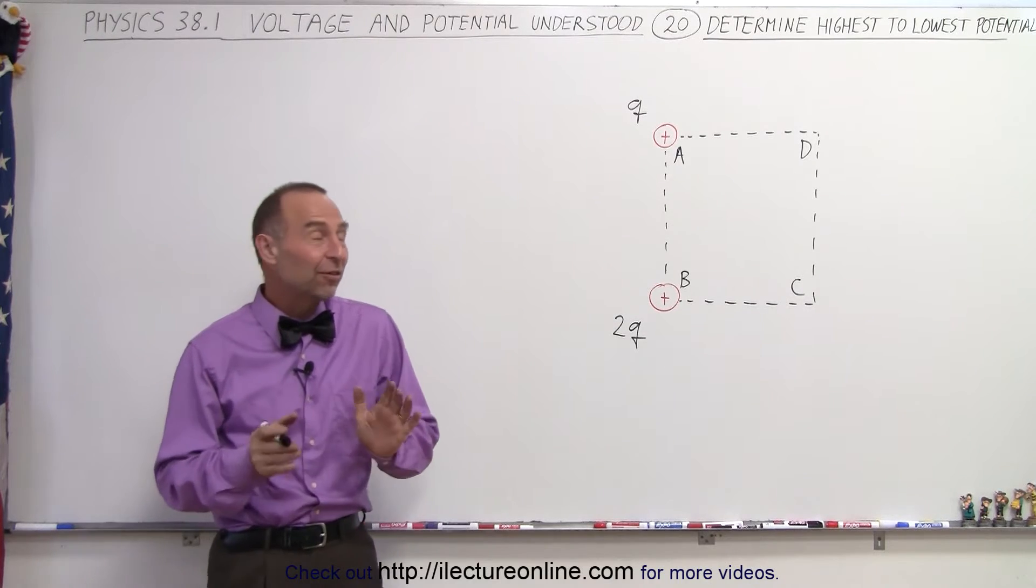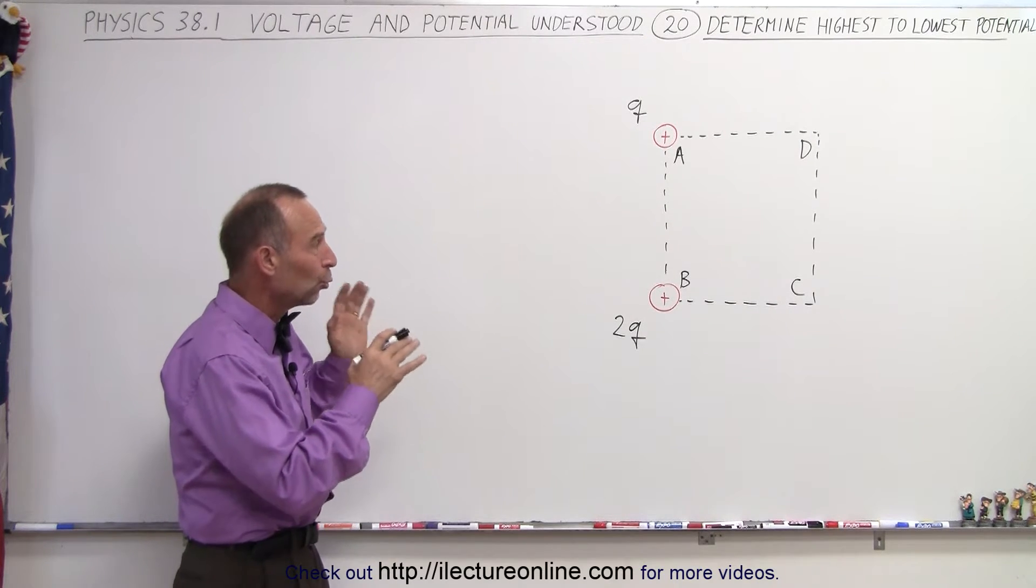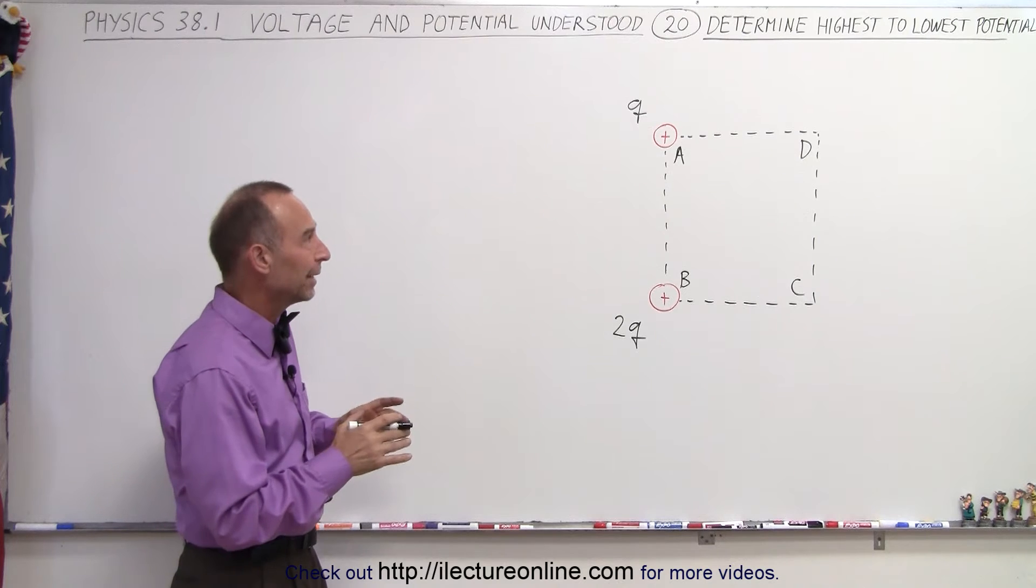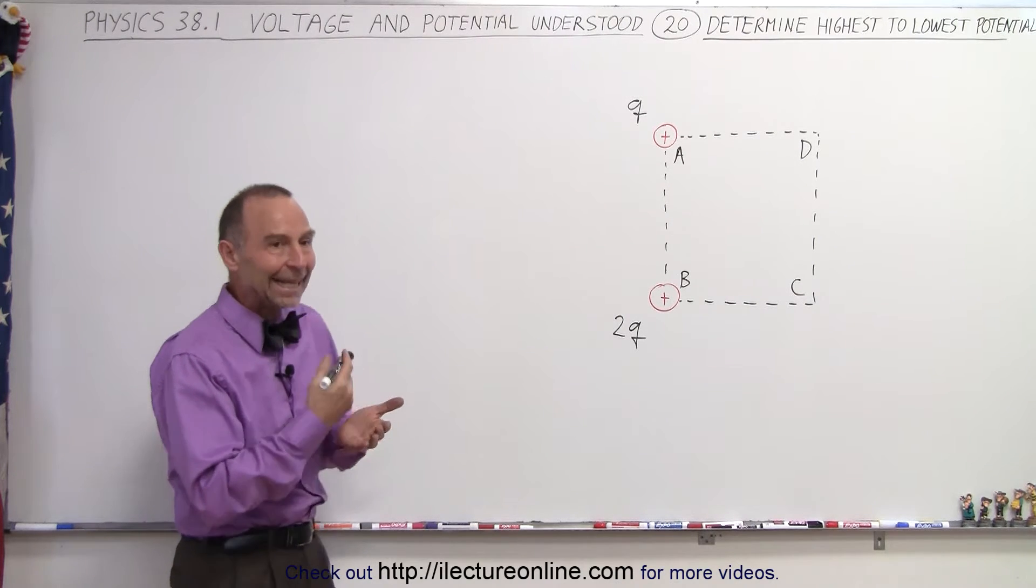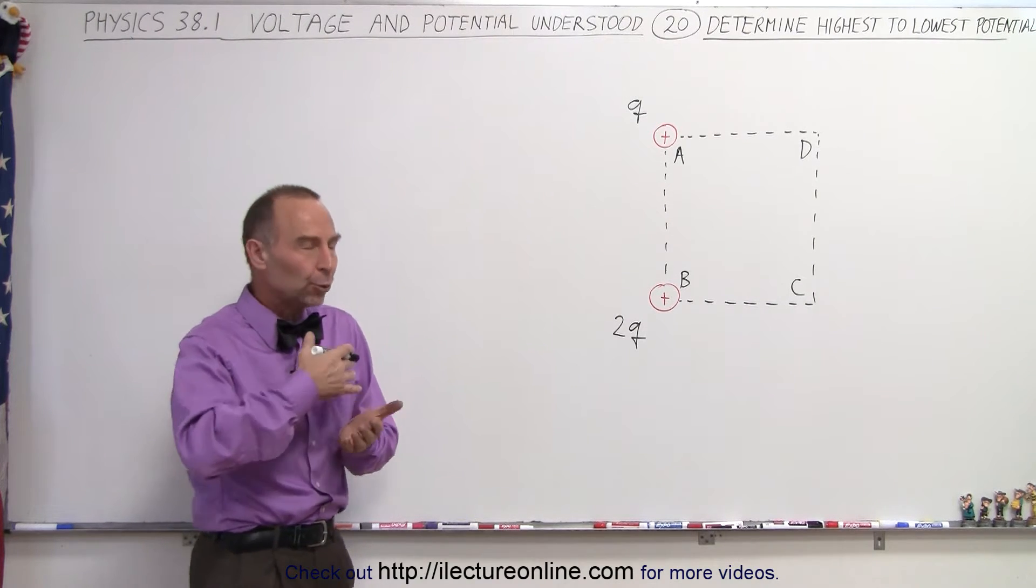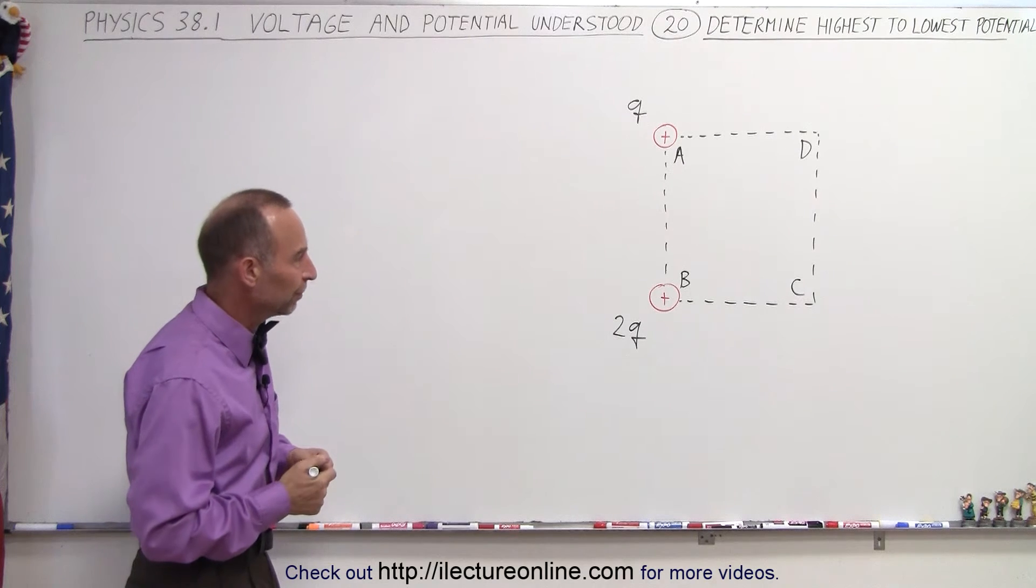Welcome to ElectronLine. In this video, we're going to determine which of the four corners of that square is at the highest potential, and then rank the rest of them in order from high to lowest potential.